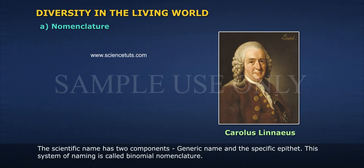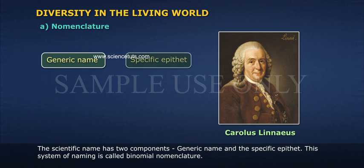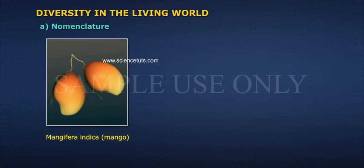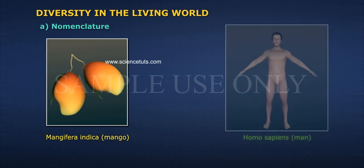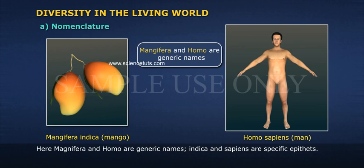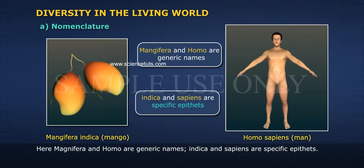A scientific name has two components: generic name and the specific epithet. This system of naming is called binomial nomenclature. It was given by Carlos Linnaeus and is used by biologists all over the world. Examples: Mangifera indica and Homo sapiens. Here, Mangifera and Homo are generic names; indica and sapiens are specific epithets.